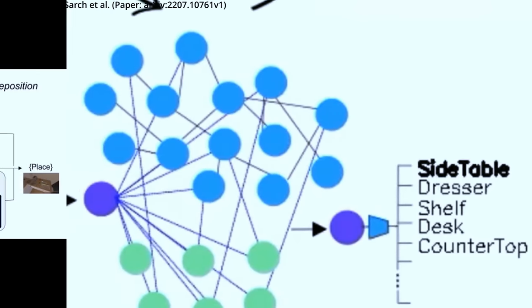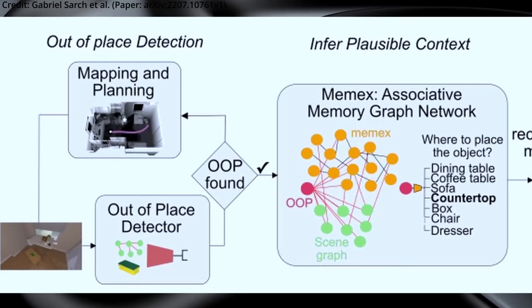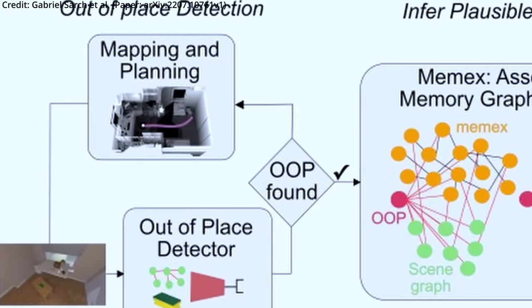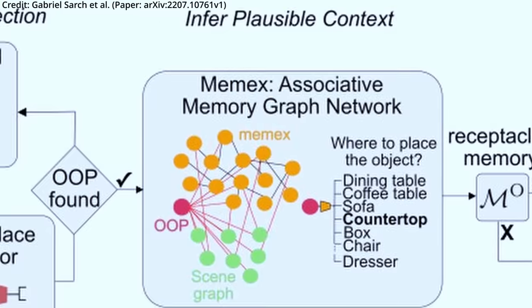So how does Tidy work its magic? The process can be broken down into three main steps. First, the model scans the area and employs an anomaly detector to identify out-of-place objects. Once a suspicious item is located, Tidy moves to it and picks it up.